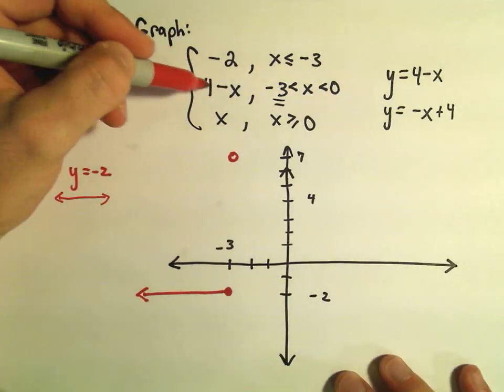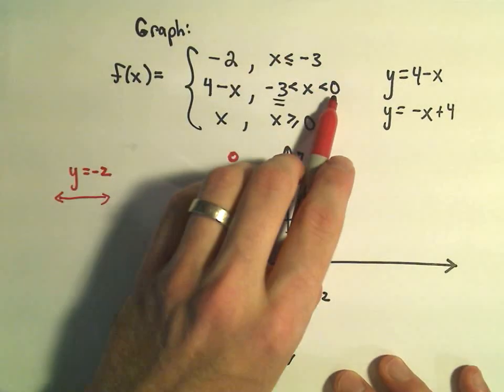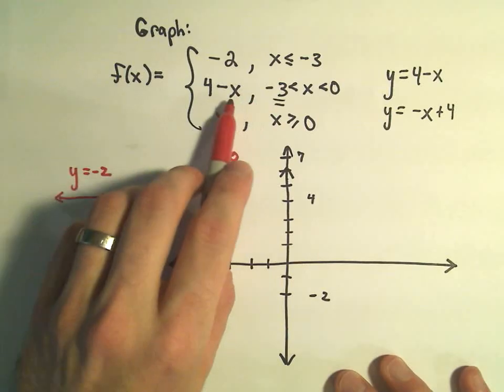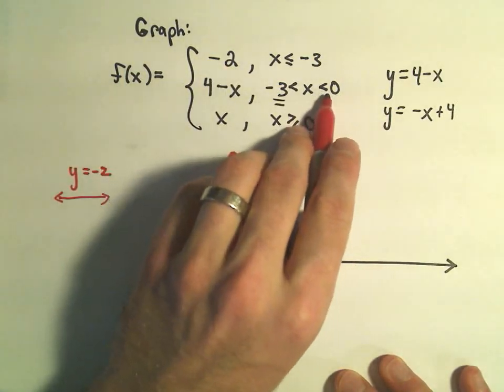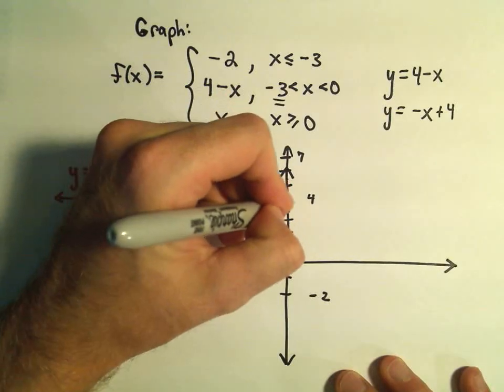If I plug in the other endpoint, 0, I would get 4 minus 0, which would give me 4. But again, since it doesn't include the value 0, I'm going to make an open circle there.